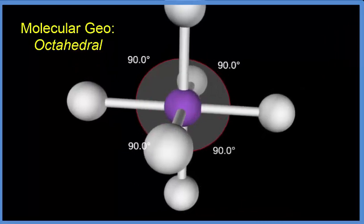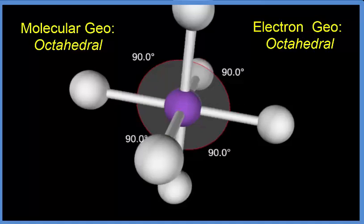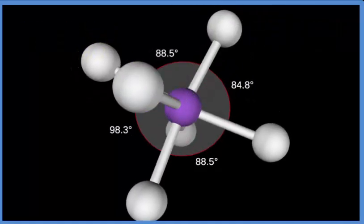If we wanted to know the electron geometry, since there are no lone pairs on that central sulfur atom here, it would also be octahedral.